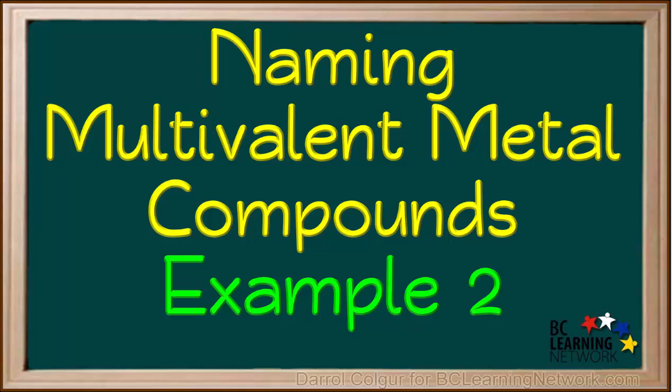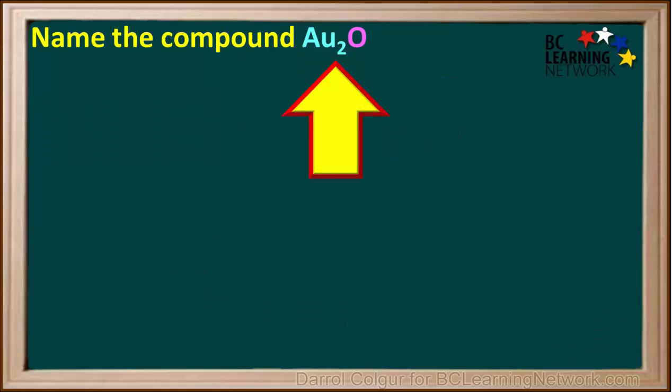We'll show you another example where we name a compound with a multivalent metal. We're asked to name the compound with the formula AU2O.